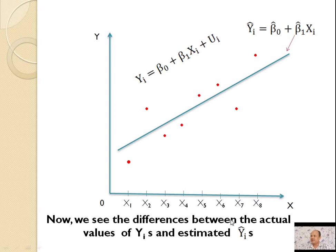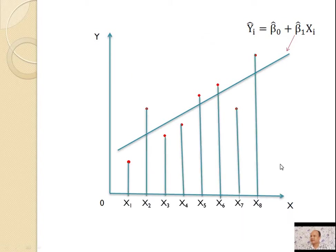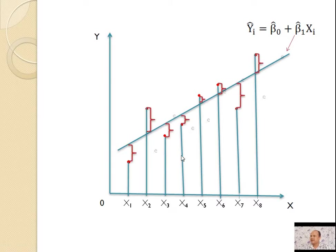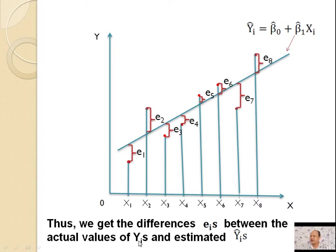Now we see the difference between the actual value of yi's and the estimated ŷᵢ caps. Here it is the actual value of y₁, and here is the estimated value of ŷ₁. The difference is e₁ = y₁ − ŷ₁. Similarly, it is the actual value of y₂ and the estimated value of ŷ₂, so the difference is e₂ = y₂ − ŷ₂. Thus we get the difference between the actual values of yi's and estimated ŷᵢ caps, that is eᵢ = yᵢ − ŷᵢ.